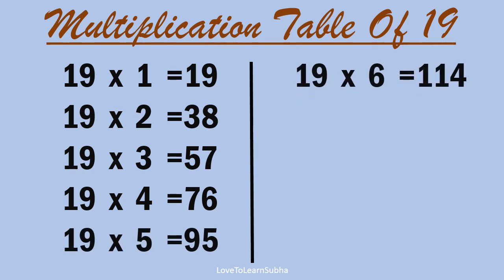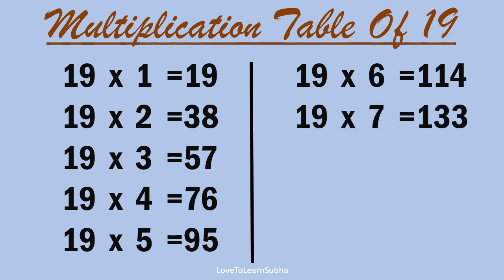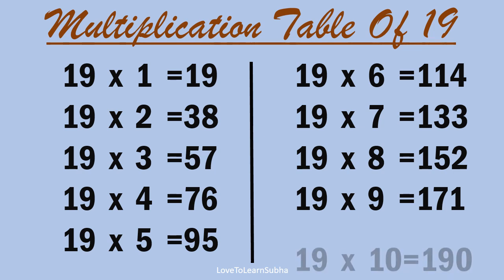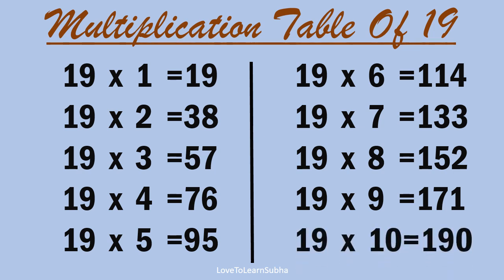19 6s are 114, 19 7s are 133, 19 8s are 152, 19 9s are 171, 19 10s are 190.